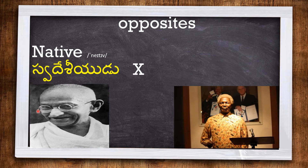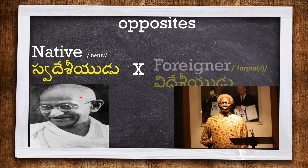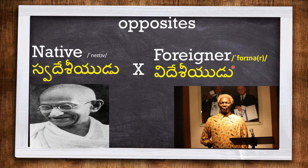Mahatma Gandhi is a NATIVE of our nation, meaning he belongs to our Indian nation. The opposite of native is FOREIGNER. Nelson Mandela belongs to another country, so he is called a foreigner to us.